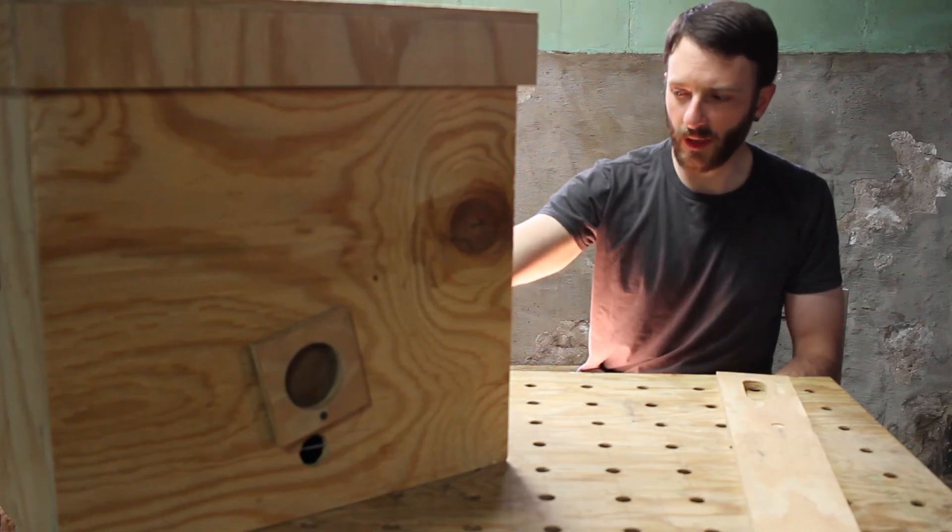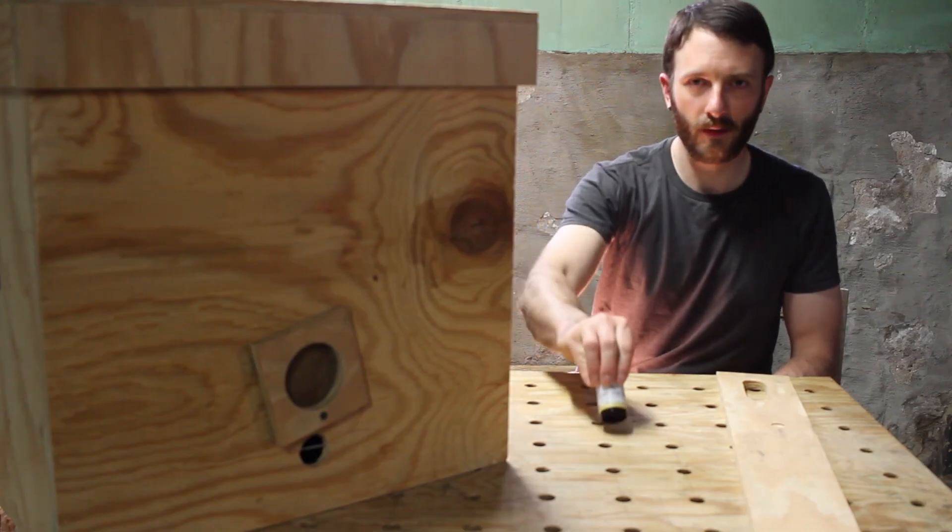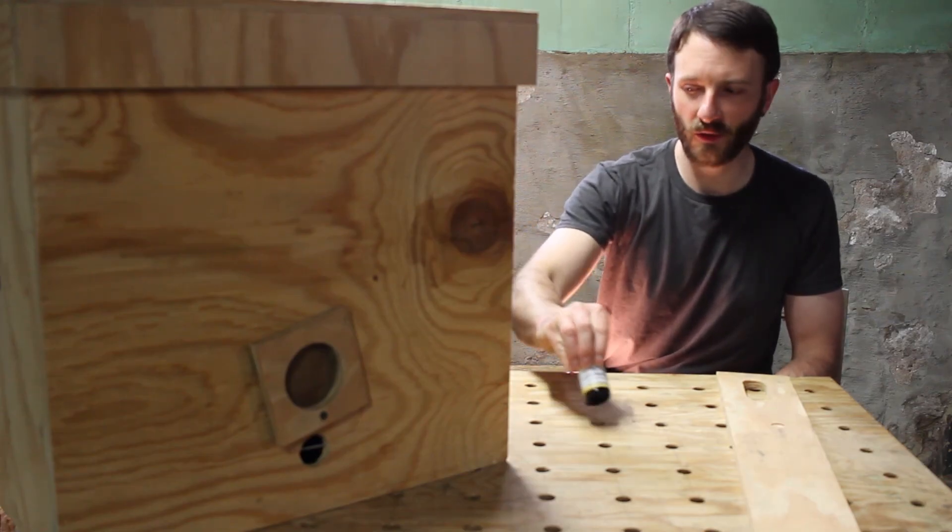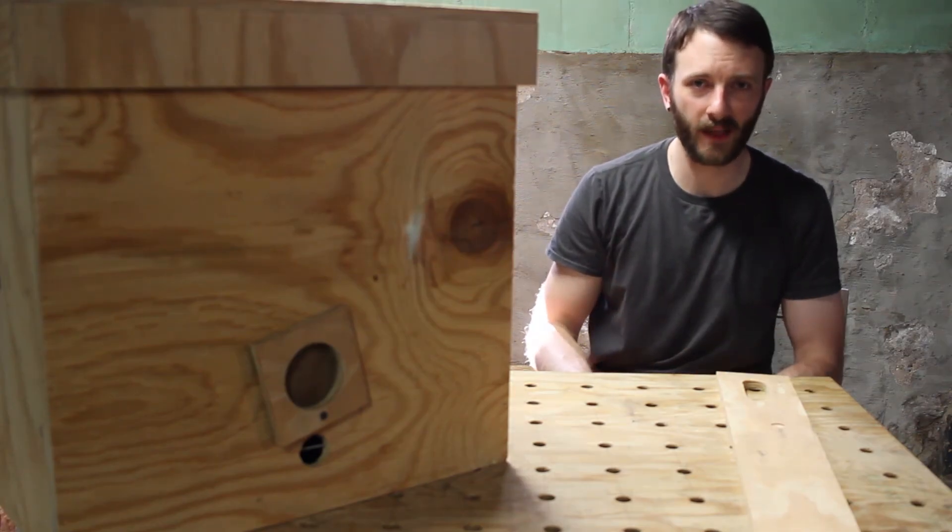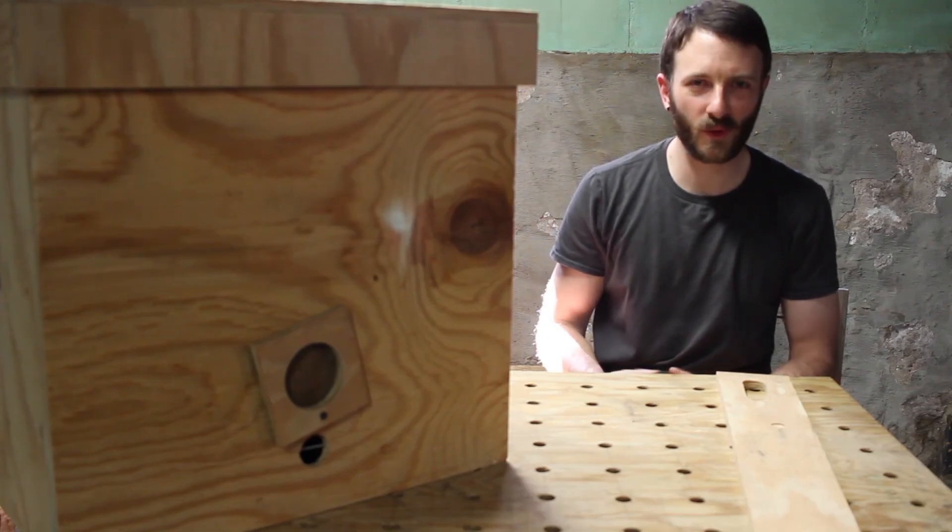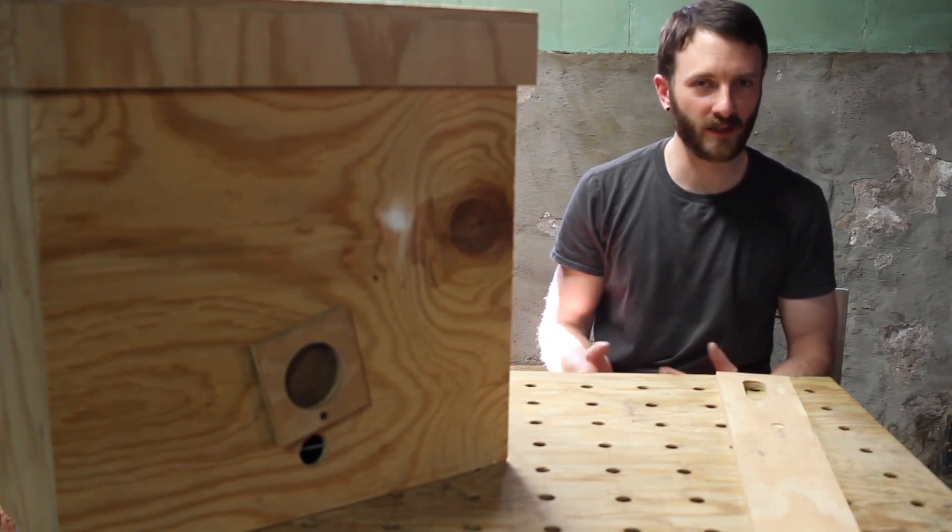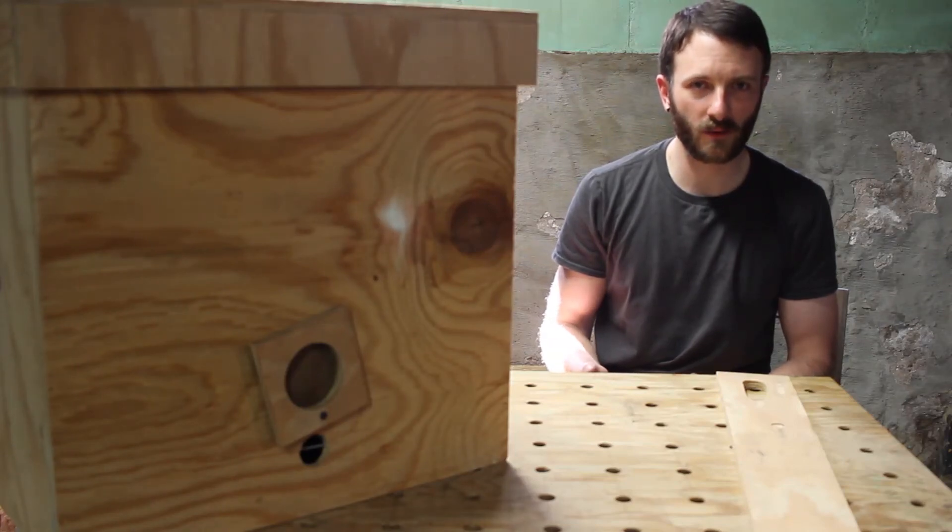Finally, before I deploy the traps I'm going to use this lemongrass oil here. I'll just apply a bit to a cotton ball or a swab and then just stick that inside the entrance. I'm hoping that the combination between the lemongrass and the beeswax is going to make the trap smell absolutely irresistible to bees and I'll catch some swarms.